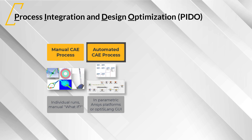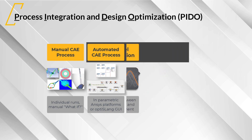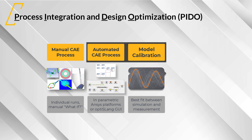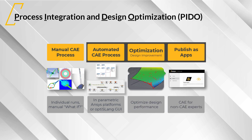Here are three examples. The automation of the CAE process will always be a necessary step, but then you may add a sensitivity analysis and optimization and end the process. Sensitivity analysis and optimization methods can also be applied to conduct a model calibration — identifying important model parameters to find the best fit between simulation and measurement results. Or, you conduct an optimization and publish the workflow as an app. The methods depend on your PIDO task, so you can understand ANSYS optiSLang as a toolbox, and you choose the tools needed for your specific parametric analysis.